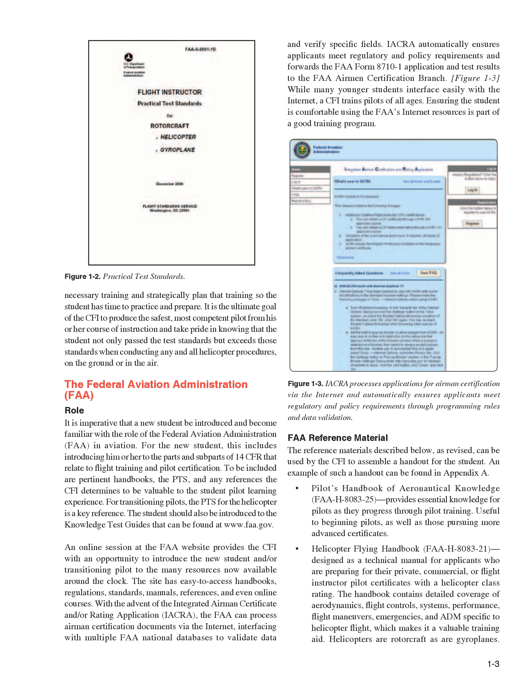FAA reference materials can be used by the CFI to assemble a handout for the student; an example can be found in Appendix A. The Pilot's Handbook of Aeronautical Knowledge, FAAH 8083-25, provides essential knowledge for pilots as they progress through training, useful to beginning pilots as well as those pursuing more advanced certificates. The Helicopter Flying Handbook, FAAH 8083-21, is designed as a technical manual for applicants preparing for their private, commercial, or flight instructor pilot certificates with a helicopter class rating.